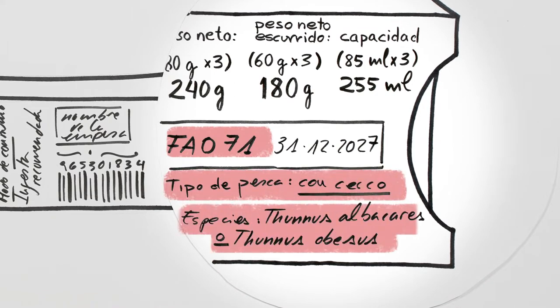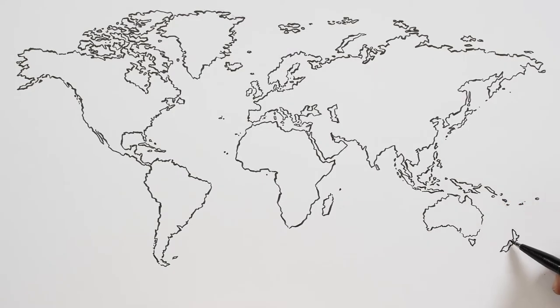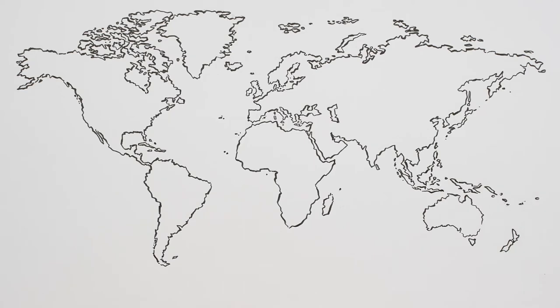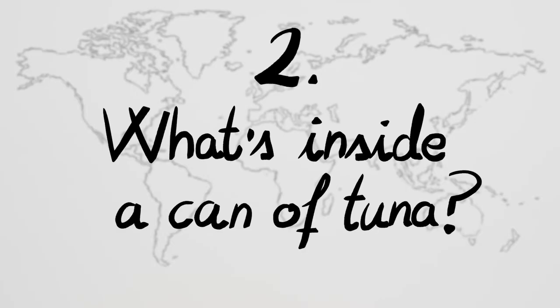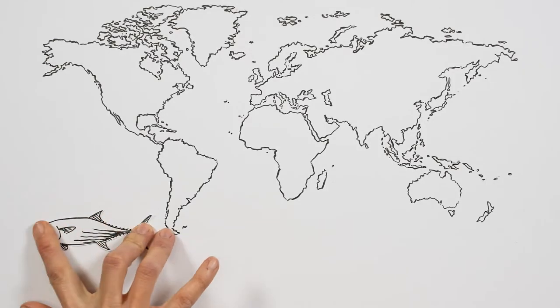There's a lot of useful information that is not on the label and that may not be available elsewhere either. For example, let's see if you can answer this simple question. What's inside a can of tuna? It's a trick question. Tuna, right? Yeah, but what kind?